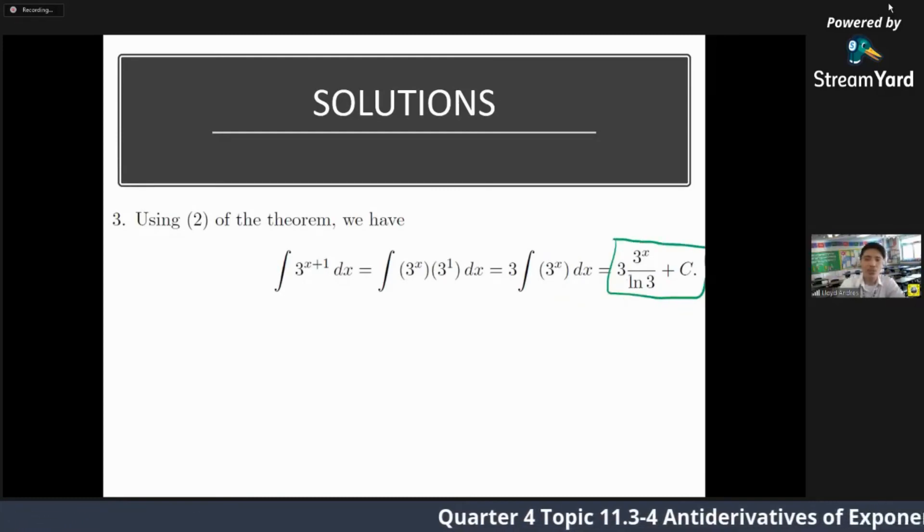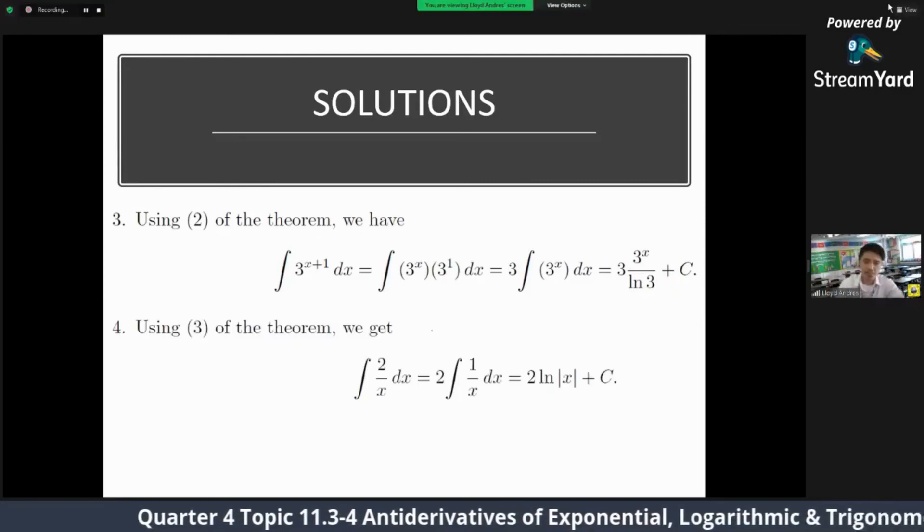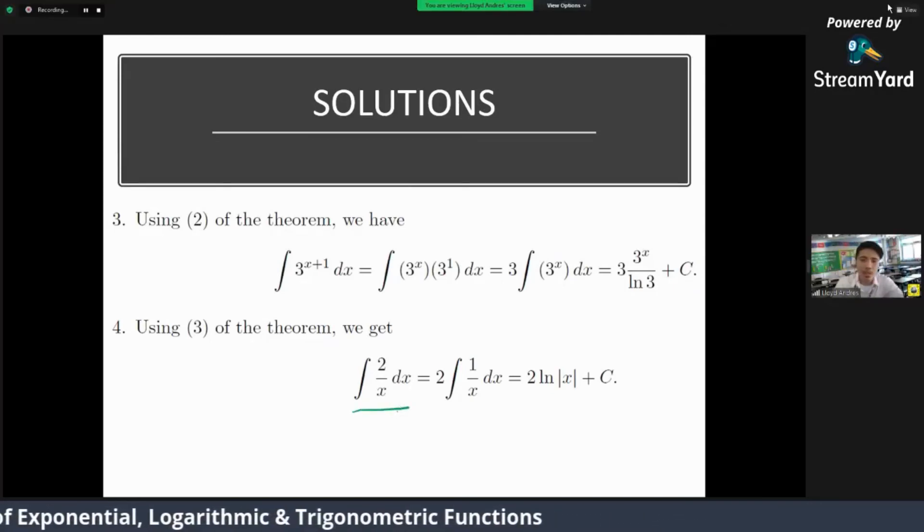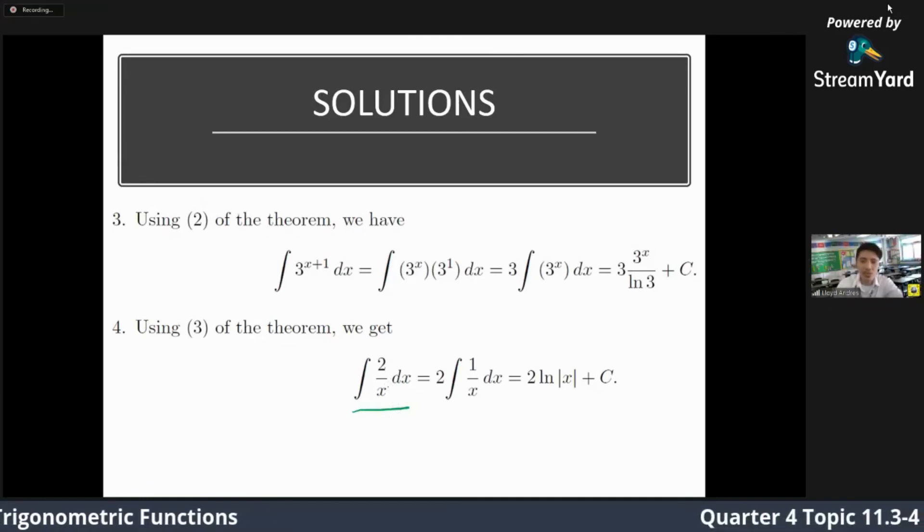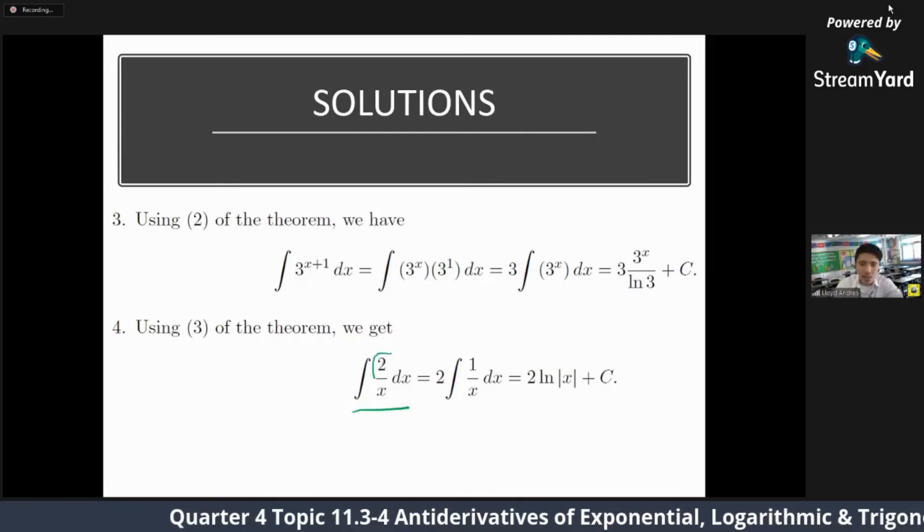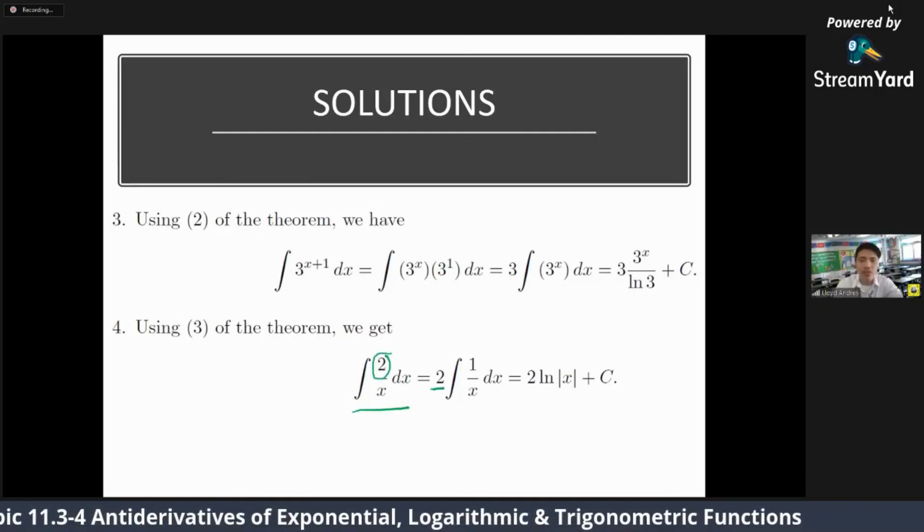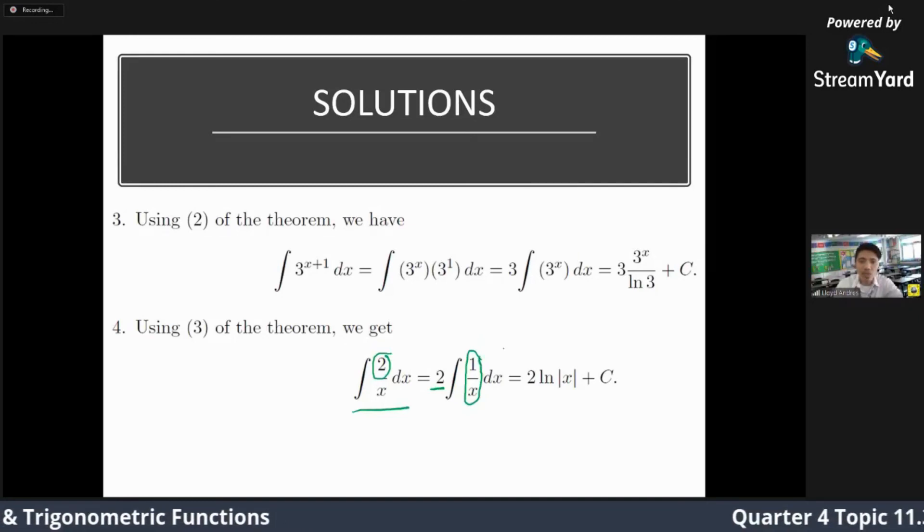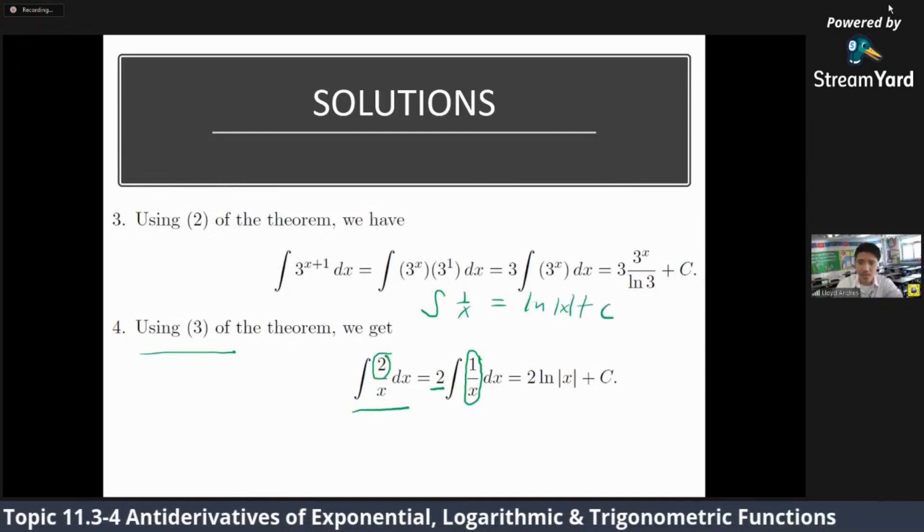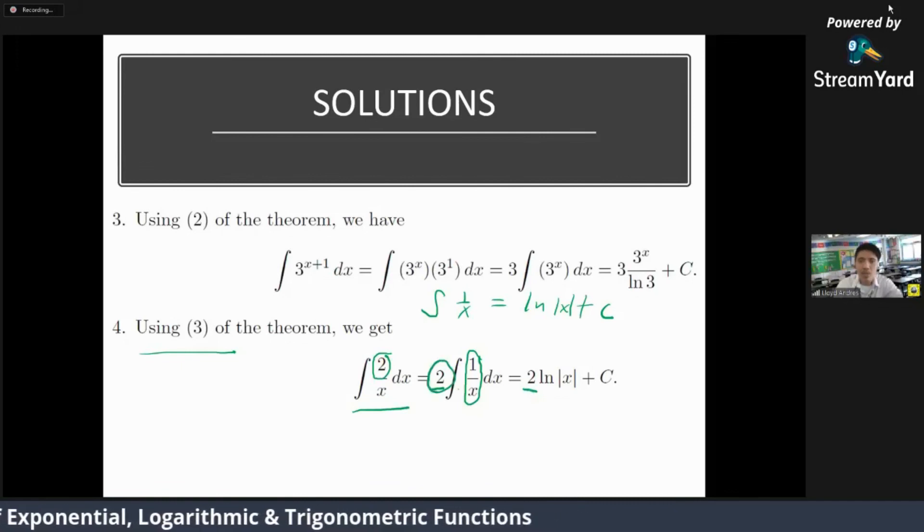Okay, I hope you can follow that. And lastly, we have here integral of 2 over x dx. Again, we don't have a division rule in antidifferentiation. And there's nothing you can do to divide. So what you can do is, since 2 is a constant, we can apply the constant multiple rule, we can just factor it out. So you're left with 1 over x. And using theorem 3, our theorem 3, the integral of 1 over x is just equivalent to ln of the absolute value of x plus c. So you'll get this because of the constant multiple, then ln of x plus c. So this is now your final answer.